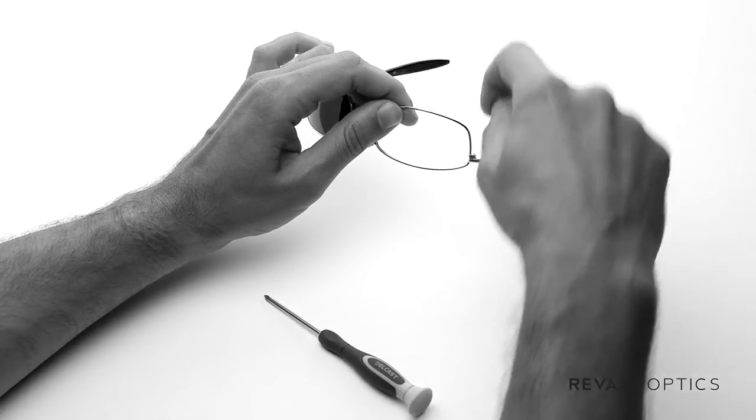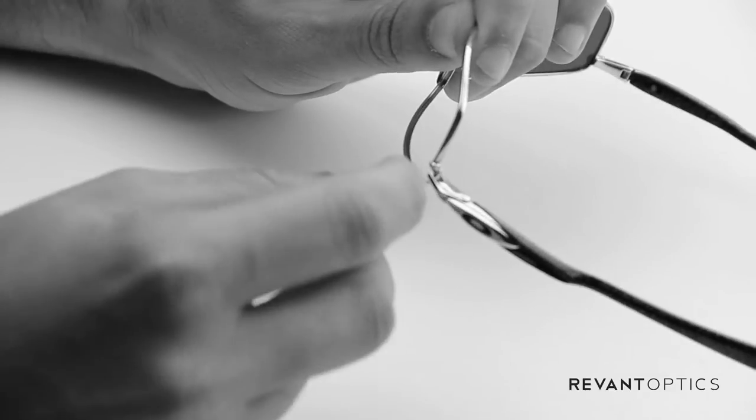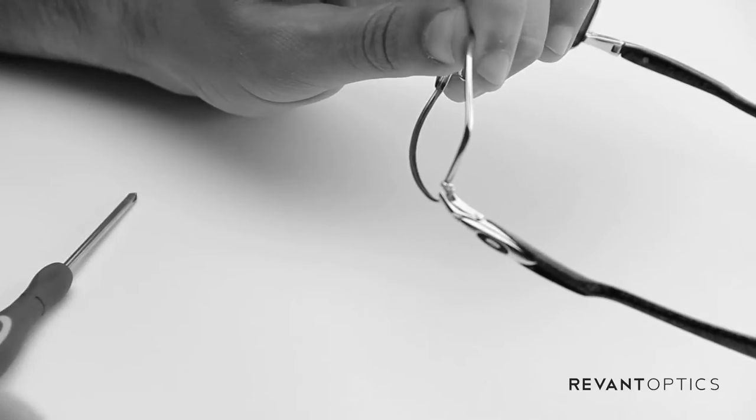Because the Phillips head screwdriver goes in this way, so if you leave it upside down, the screw will stay in place and you don't have to worry about it falling out.